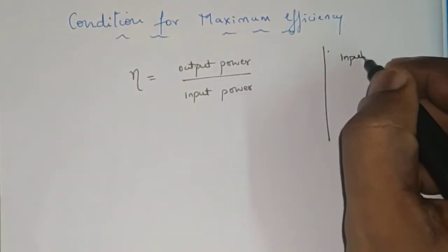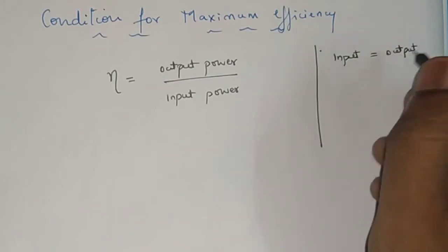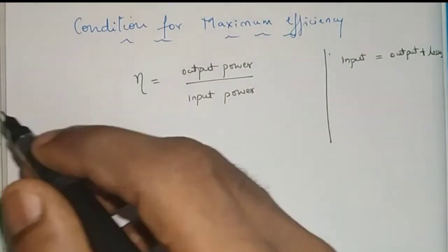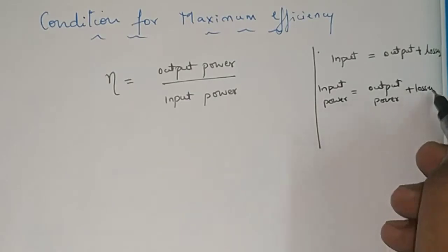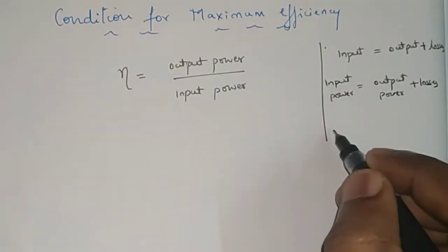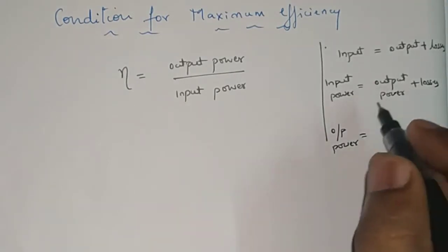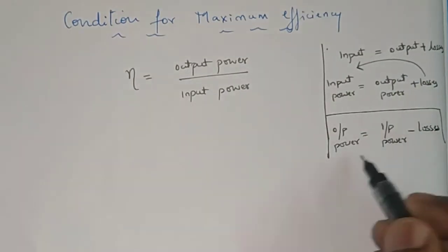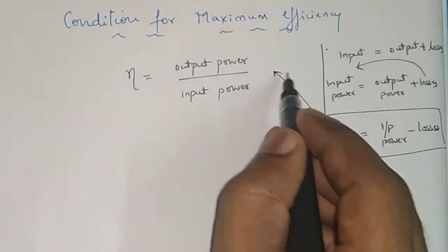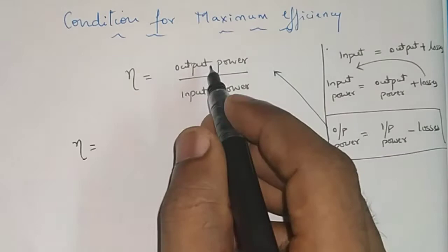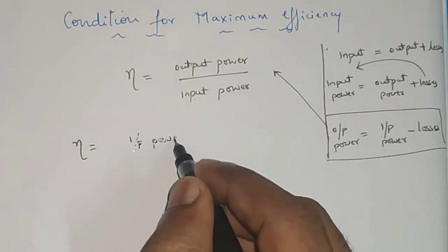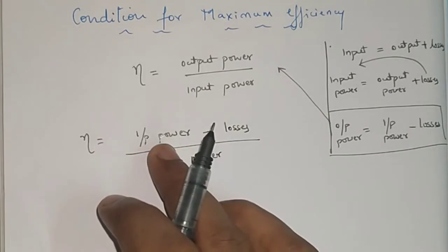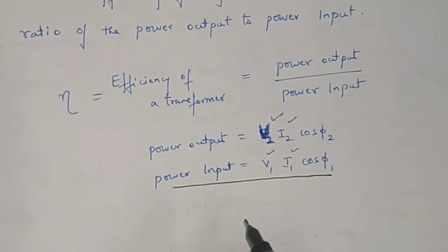Before going to the next step, we know that input is not always equal to output because there will be losses of any kind. So input is not always equal to output — it is output plus losses. Now if I want to write it for power, I will rearrange this equation for output power. Output power is equal to input power minus losses. I will substitute this in the efficiency formula: eta is equal to input power minus losses divided by input power, and input power is nothing but V1·I1·cos φ1.